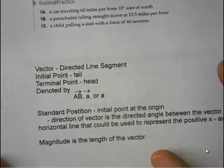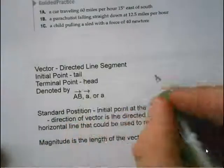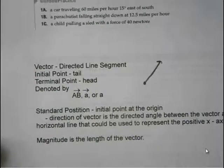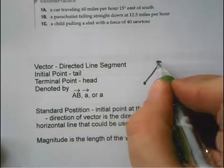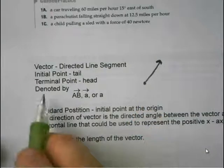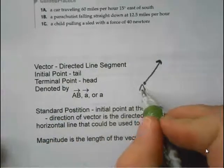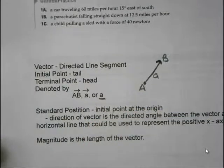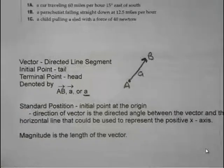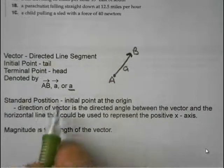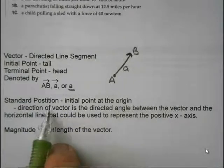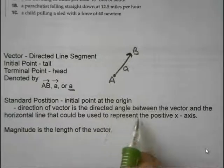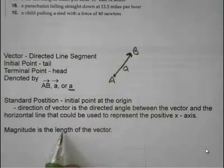A vector is a directed line segment. The initial point is called the tail. When you draw a vector, this is the initial point — that's called the tail. Then we have a terminal point called the head, and we usually put an arrow on that end. It could be denoted as vector AB, vector A, or just A. In standard position, the initial point is at the origin. The direction of a vector is the directed angle between the vector and the positive x-axis. Magnitude is the length of the vector.